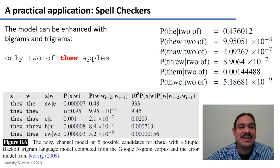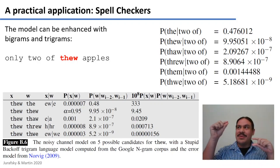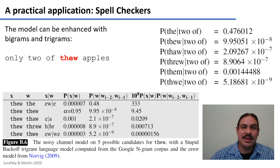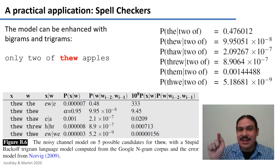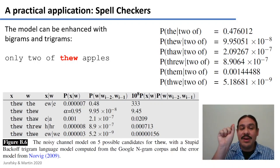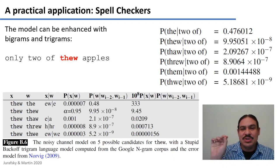In this example, we have the sentence 'only two of thew apples', and incredibly 'thew' is a real word — it's a kind of muscle. So if you search for 'thew' in the dictionary, you'd find it. However, the trigram probability of 'two of thew' is very low. As you can see, the probability of 'thew' given the words 'two of' is very low. However, the probability of 'the' given 'two of' is very high — 0.476. So this would be the trigram probability of 'two of the'.